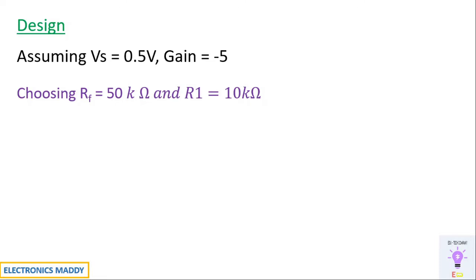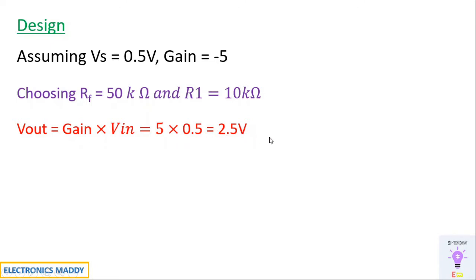Higher the value you choose, better is the response with respect to the circuit — particularly for frequency analysis. So what is Vout? Vout is nothing but gain times Vin: 5 × 0.5 = 2.5 volts. Our aim is to obtain an output voltage of 2.5 volts with a phase shift of 180 degrees. Once we understand the inverting amplifier design, we can get started with simulating in MATLAB.